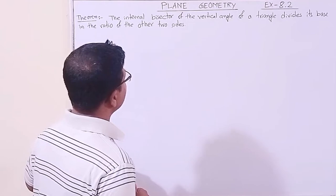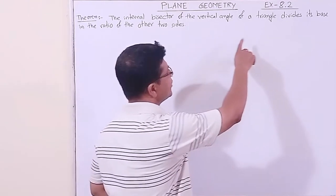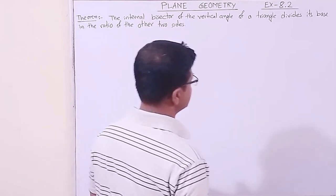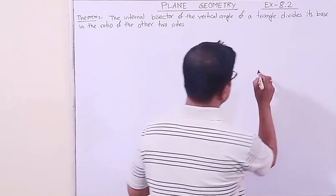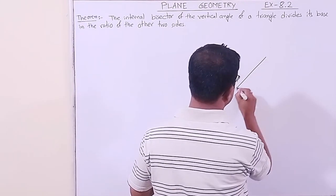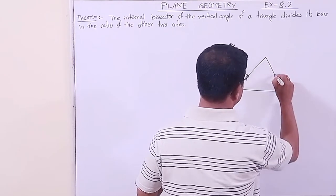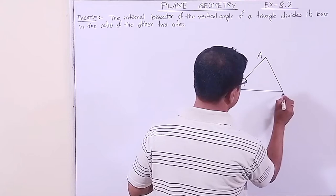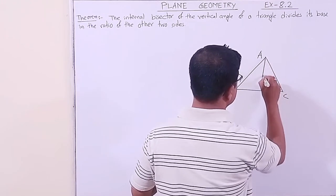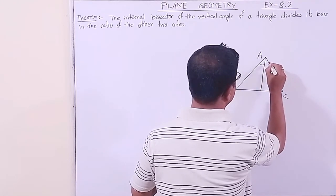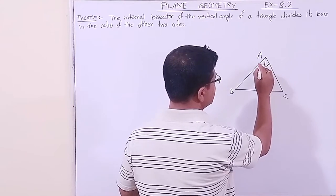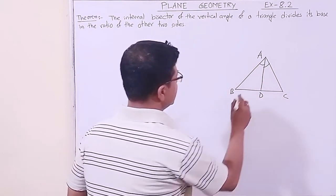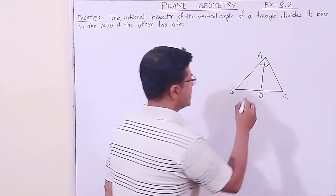The internal bisector of the vertical angle of a triangle divides its base in the ratio of the other two sides. For this, let us consider triangle ABC. I am drawing a freehand diagram. This is triangle ABC, and AD is the angle bisector, meaning these two angles are equal. This point is D.